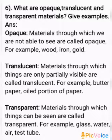Translucent: materials through which things are only partially visible are called translucent. For example, butter paper and the oiled portion of paper.